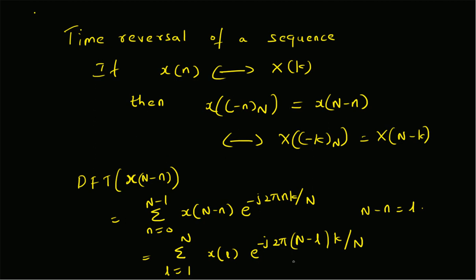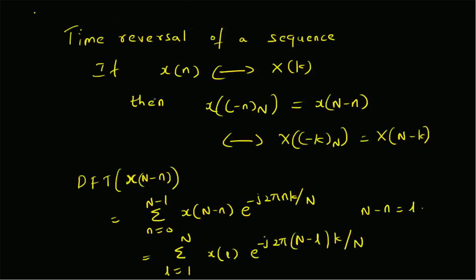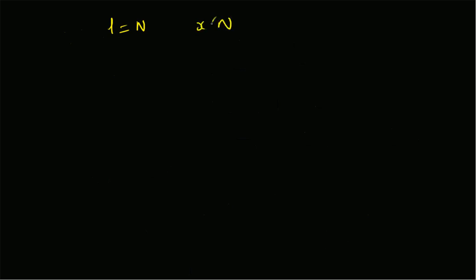Our goal is to rewrite the indices, that is the limits of the summation. Since l goes from 1 to N, we argue that the value at l=N — that is x[N] — along with the exponential e^(-j2π(N-N)k/N) is equivalent to the term at l=0.